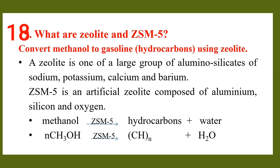Number 18: What are zeolite and ZSM5? We can convert methanol to gasoline using zeolite. We can see that ZSM5 is used in the methanol to gasoline process, producing hydrocarbons.